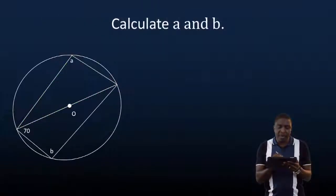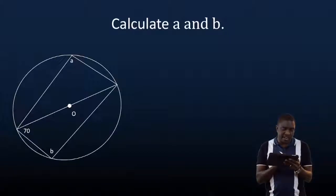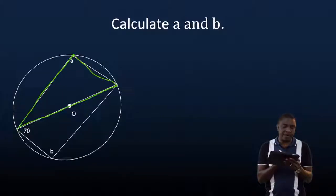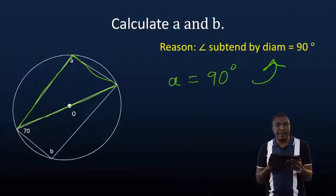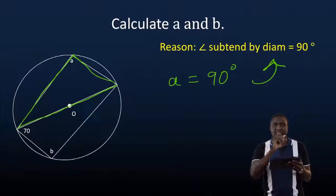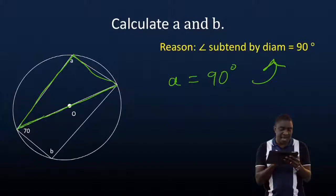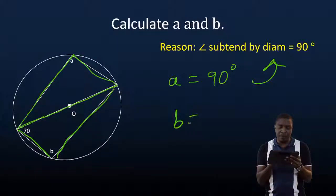Let's apply this in an example: calculate angles A and B. In this diagram there is a diameter, and that diameter subtends angle A. Because angle A is subtended by the diameter, it becomes 90 degrees. Similarly, the diameter is subtending angle B, so angle B also becomes 90 degrees. The reason for both is: angle subtended by the diameter equals 90 degrees.